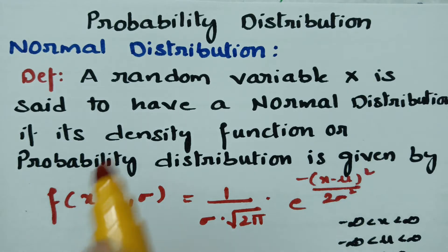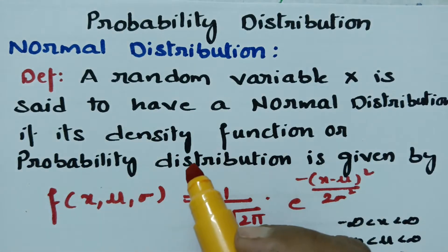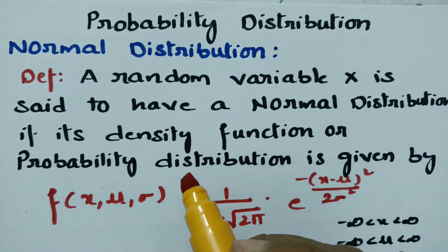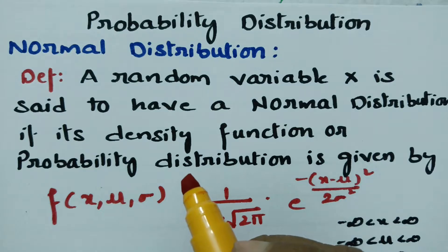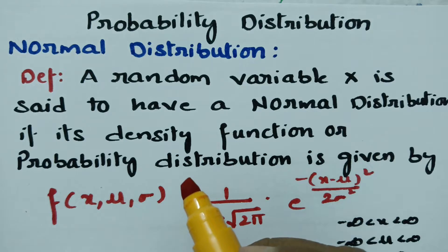For the continuous process, the most common pattern of distribution of a continuous variable found in nature — for example, heights, weights, ages, intelligence, marks in the examination, or lifespan — can be discussed in normal distribution.